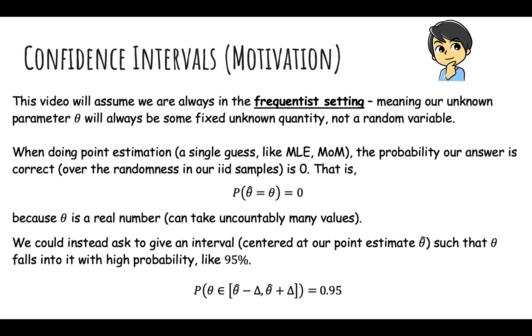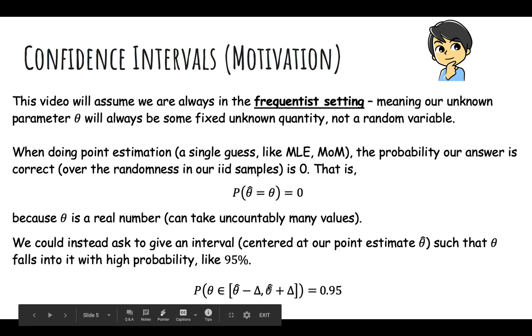So instead, we can give an interval. Instead of just our maximum likelihood estimate, we give an interval around it, such that theta falls into it with high probability. It's like how continuous random variables will never equal exactly any particular value. We want the probability that theta lies in this interval, theta hat plus or minus delta, to be something like 95% or 99%, which is something you can choose.